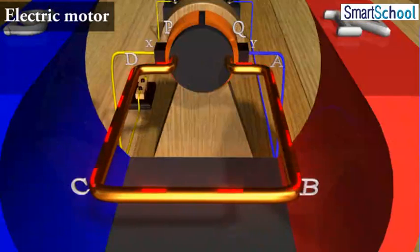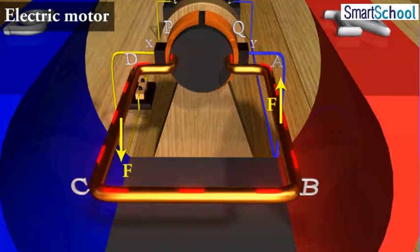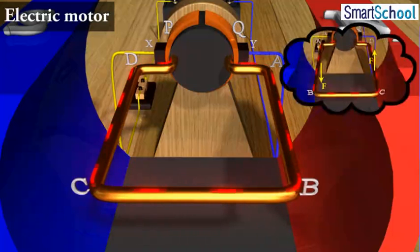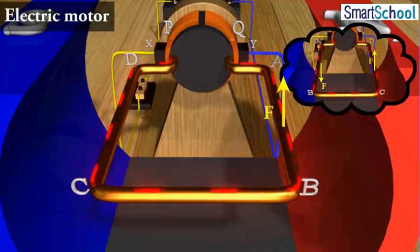The reversal of current also reverses the direction of force acting on the two arms AB and CD. Thus, the arm AB of the coil that was earlier pushed down is now pushed up and the arm CD, previously pushed up, is now pushed down.